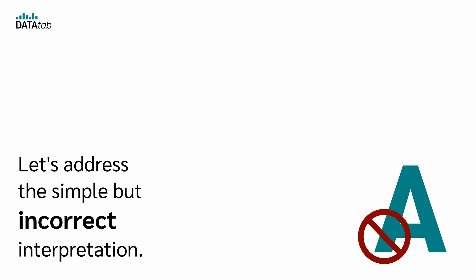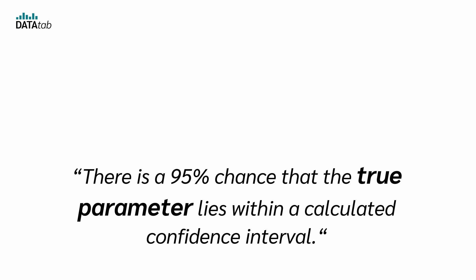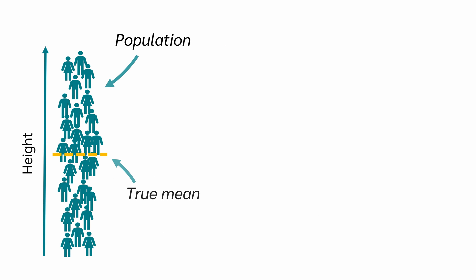So let's address the simple but incorrect interpretation. This interpretation goes like this: There is a 95% chance that the true parameter lies within a calculated confidence interval. So what does this actually mean?